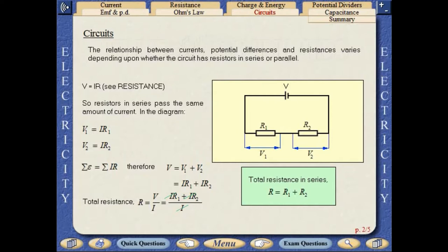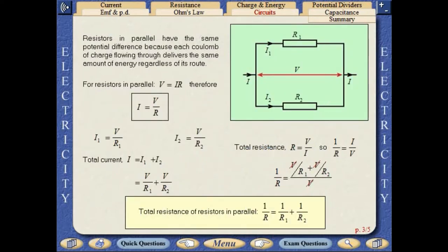Resistors in series pass the same amount of current. Resistors in parallel have the same potential difference because each coulomb of charge flowing through delivers the same amount of energy regardless of its route.